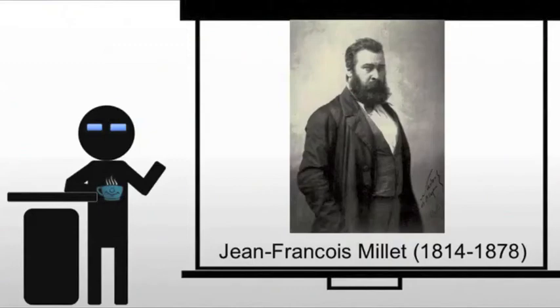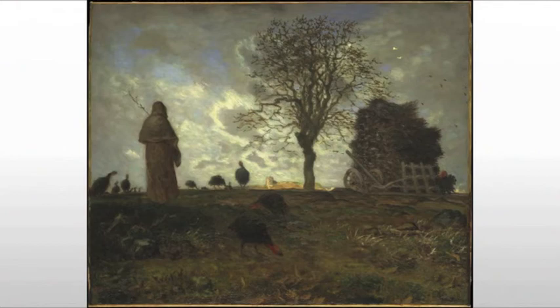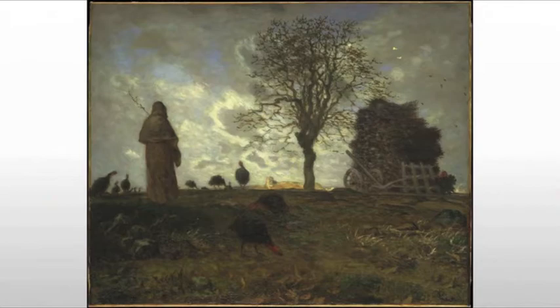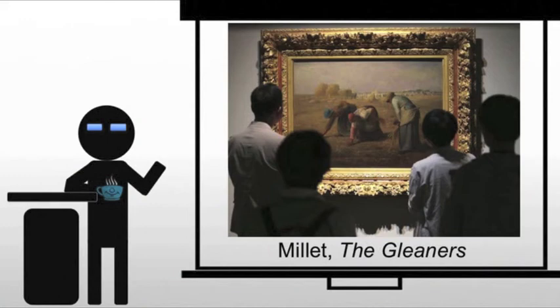Jean-François Millet is again going to find his subjects amongst the ordinary masses. He's one of the Barbizon painters, known for his detailed and yet very loose images of the French countryside. This is another step towards Impressionism — that looseness of form capturing a moment in time, a key element of Impressionism later on. But we're here to talk about The Gleaners, this incredibly famous painting of the period.